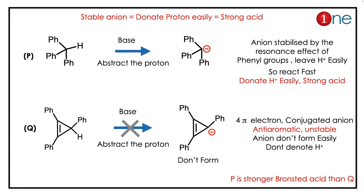Once Q loses the H⁺, what really happens is it forms an anti-aromatic compound. Anti-aromatic compounds are highly unstable and won't form at all, because it has 4π electrons in a conjugated and planar system. According to Hückel's rule, it is anti-aromatic. So the anion does not form easily, meaning it doesn't donate H⁺ easily. Therefore, P is a stronger acid than Q.